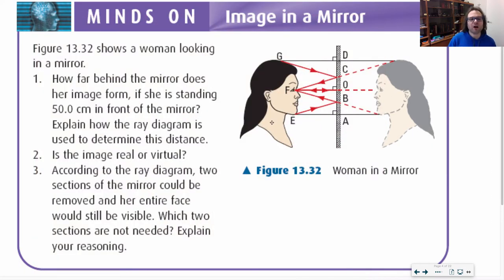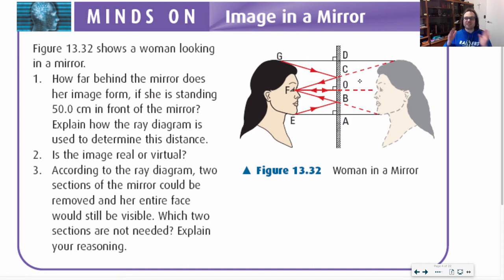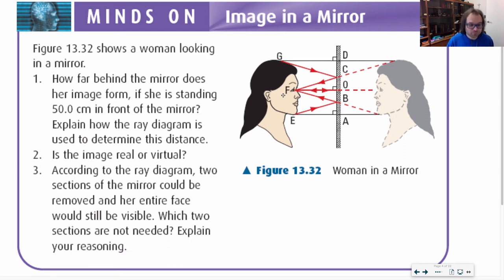How far behind the mirror does her image form if she is standing 50 centimeters in front of the mirror? We have this ray going here, and then my reflection is going to the eyes. If we continue this reflection out, everything is going to be equal distance, so she's going to look 50 centimeters behind the mirror. Is the image real or virtual? The image will have to be virtual, because she's on this side of the mirror — it's not on the same side — so the image is virtual. According to the ray diagrams, two sections of the mirror can be removed and her face would still be visible: sections AB and CD.